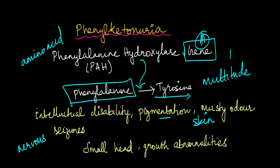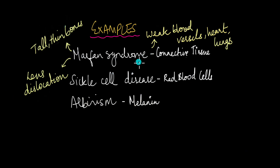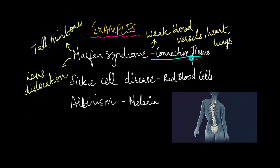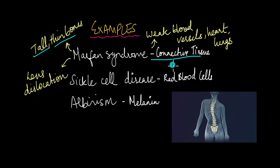There are other examples of pleiotropy as well. Marfan syndrome is a connective tissue disorder that affects the genes involved in producing connective tissues like bones and cartilage. Because of that, people with Marfan syndrome are abnormally tall and have abnormally thin and curved bones. Because it affects the connective tissues, it makes it difficult for the body to hold together the blood vessels, the heart, and the lungs, making them very prone to prolapse.